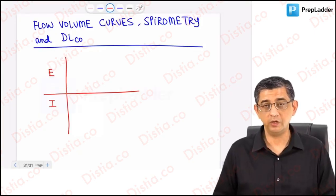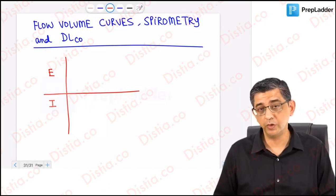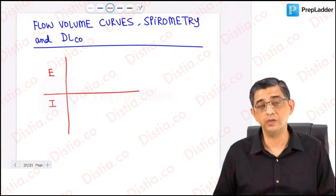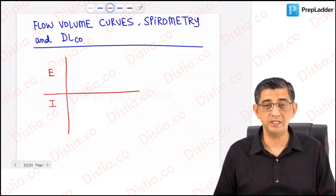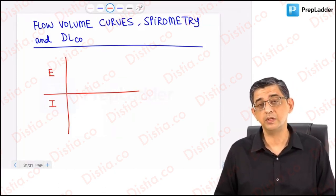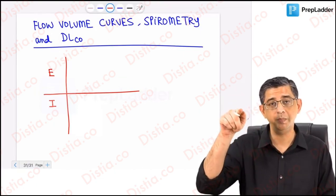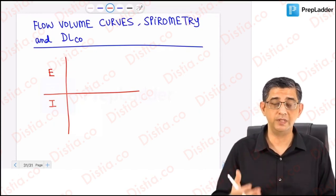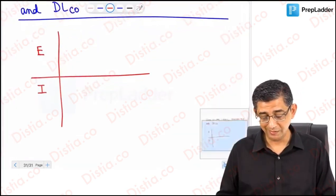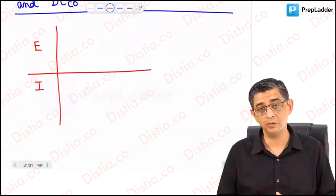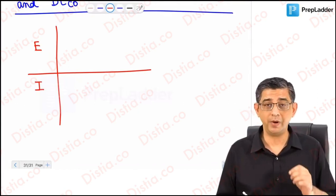Welcome back. The next topic we're going to study is pulmonary function tests. I'll be drawing a couple of flow-volume curves before discussing some mathematical aspects of spirometry, and in the end talk about DLCO — diffusion capacity of the lung for carbon monoxide — and its applied aspects. In spirometry, inspiration is when you're going up in the curve and expiration is going down, but the flow-volume curve is the opposite: inspiration is inferior and expiration is superior.